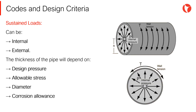Sustained loads are caused by mechanical forces present during the normal operation of the system. Typically, they do not govern the design and configuration of the system. Sustained loads include the pipe's own weight and the internal pressure.